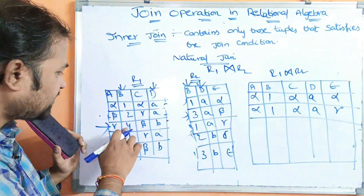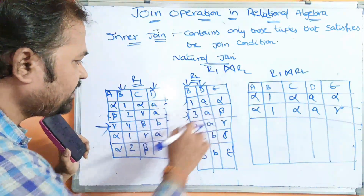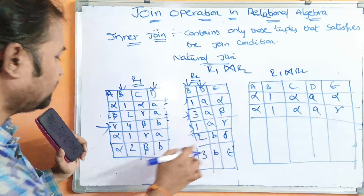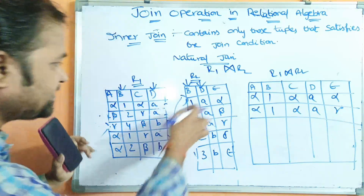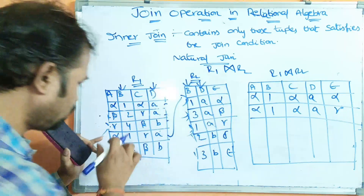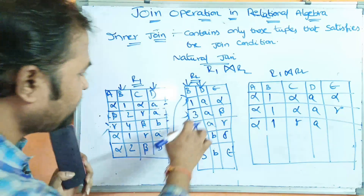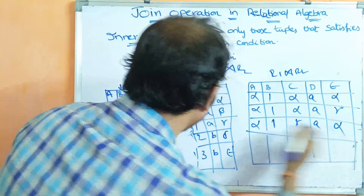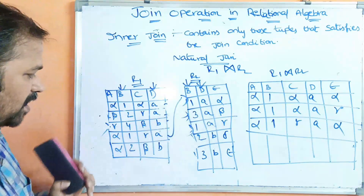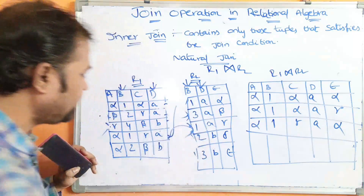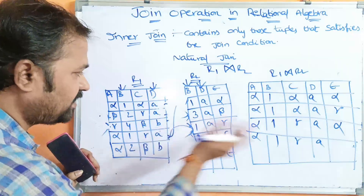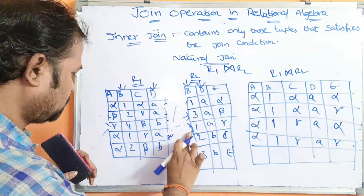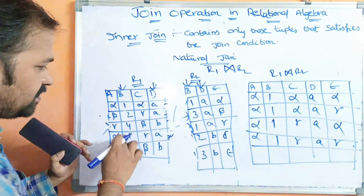Now let us consider the third row of the first relation and compare with all the rows of the second relation. The BD values are 4B. So 4B compared with 1A, 3A, 1A, 2B, 3B — none match. Next we have 1A. 1A matches with the first row of the second relation, so those two rows will be combined: Alpha, 1, Gamma, A and E is Alpha. Next, 1A compared with 3A — not equal. 1A compared with 1A — equal, so these two rows are combined: Alpha, 1, Gamma, A and E is Gamma. Next, 1A compared with 2B — not equal. 1A compared with 3B — not equal.